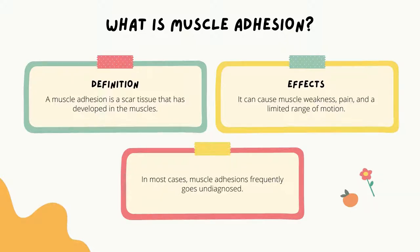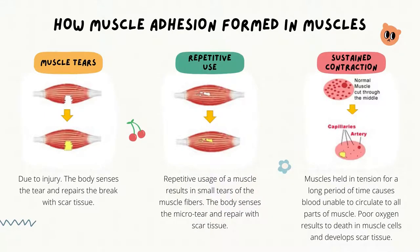In most cases, muscle adhesion frequently goes undiagnosed. A muscle adhesion is formed as a result of the body's self-healing mechanisms. Here are some of the causes of formation of muscle adhesion. First, it can be due to muscle injury. If you sprain or strain a muscle, scar tissue forms. The sprain or strain itself might heal. However, as a part of the healing process, muscle adhesions may form and create a limited range of motion and other issues.